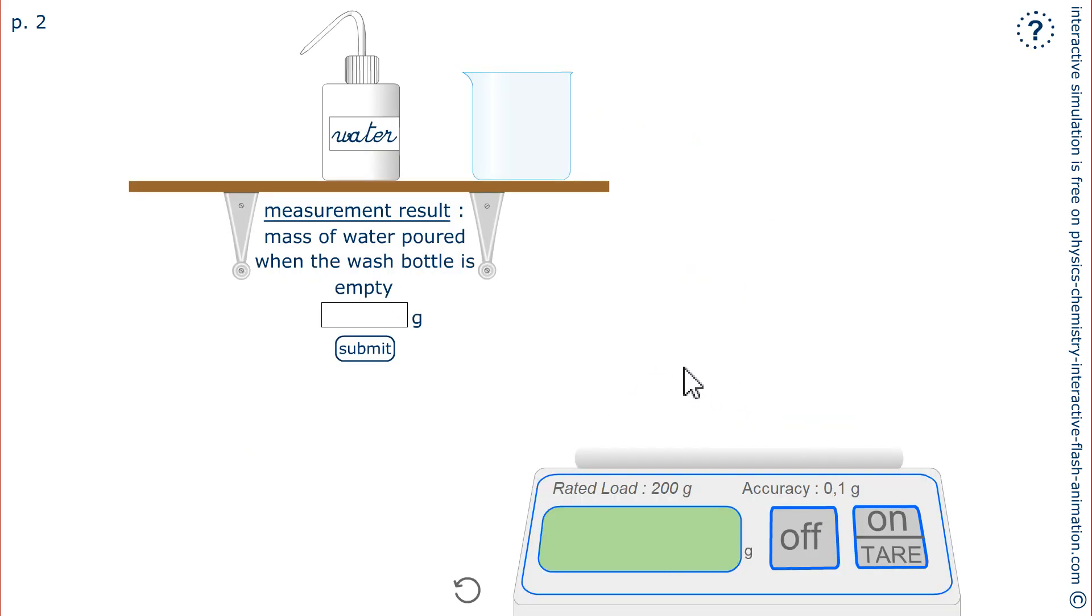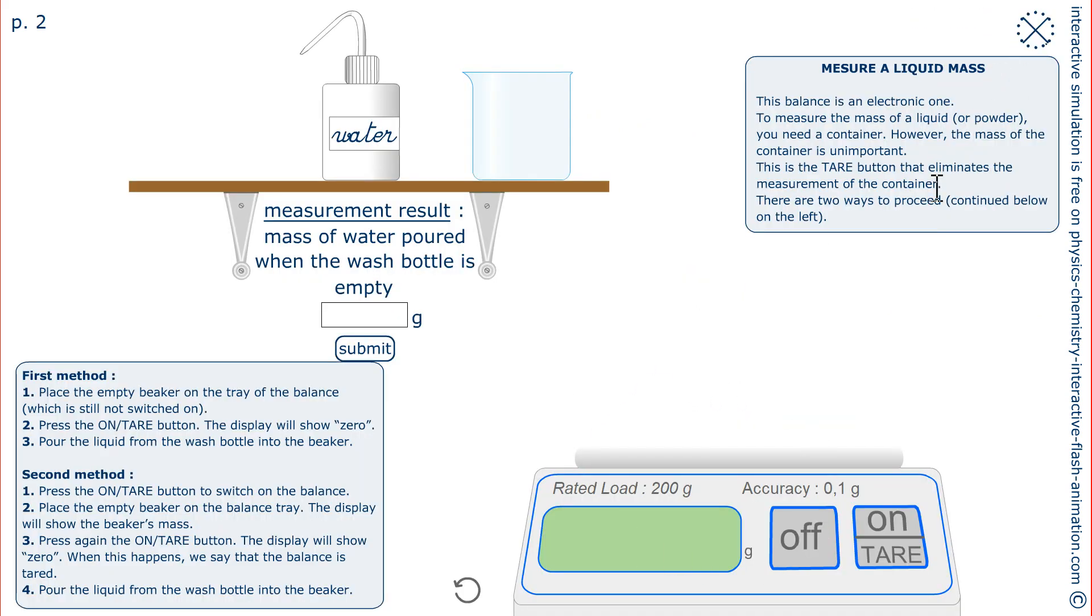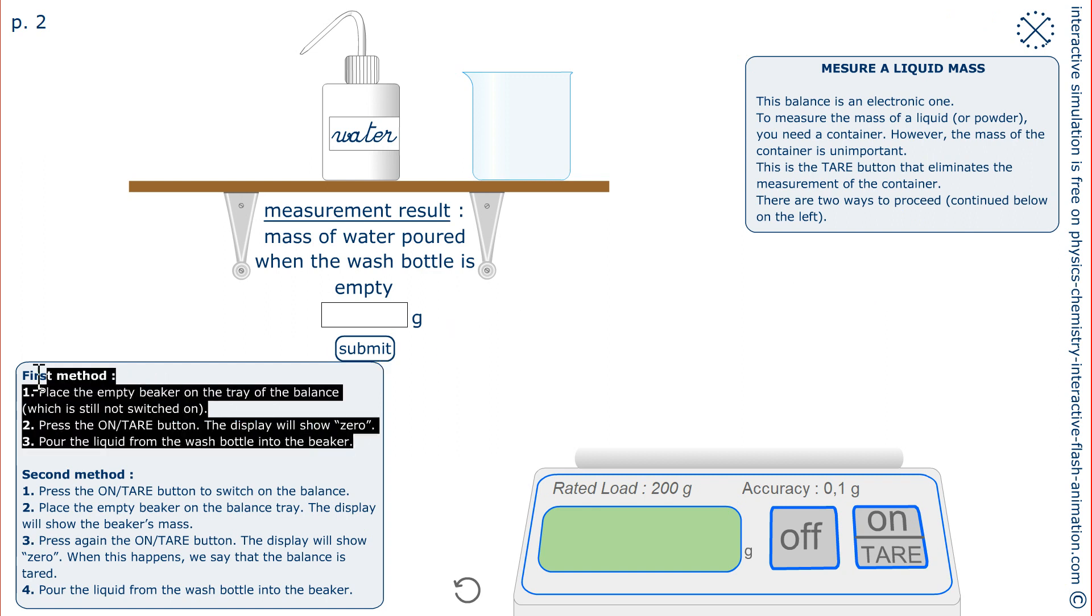Now the laboratories are equipped with electronic scales. We are going to measure the mass of a liquid. There are two ways to do this. In both cases, it is a question of getting rid of the mass of the container in order to measure the mass of the liquid alone.